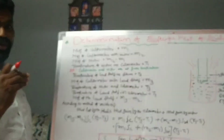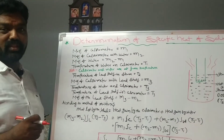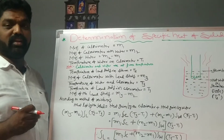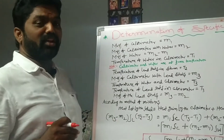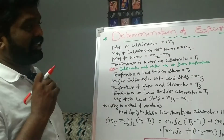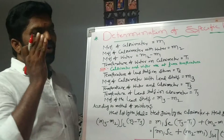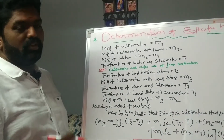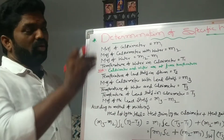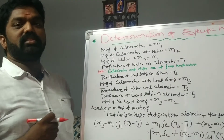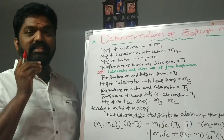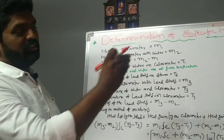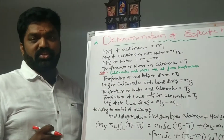We are going to discuss how to find the specific heat of a solid — a determination of specific heat of solid. The required materials for this activity are: a calorimeter, wooden box, water, stirrer, thermometer, and steam heater.